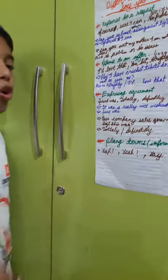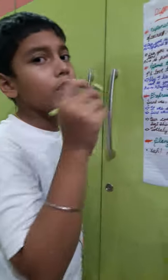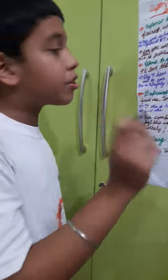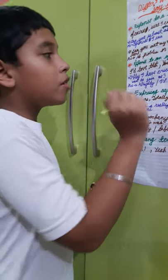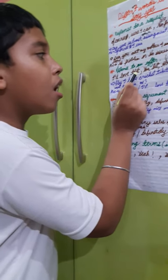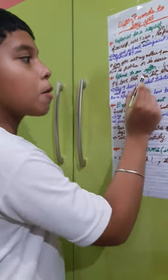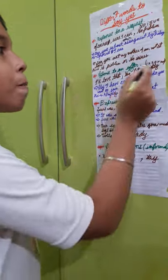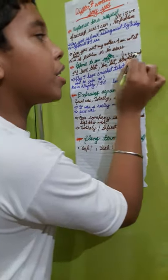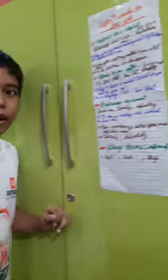Our next topic is response to an offer. This is when someone gives you an offer and you accept it. Instead of just saying yes I will, there are better phrases: first, 'I would love that'; second, 'you bet'; third, 'all righty.' Note that 'all righty' is informal.